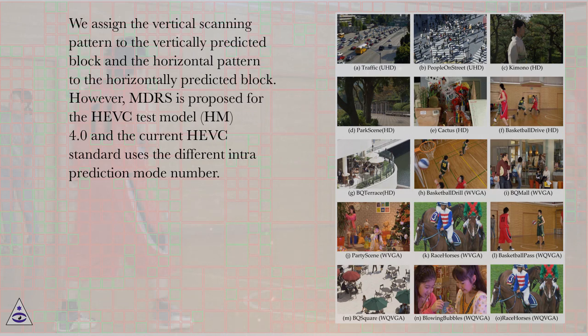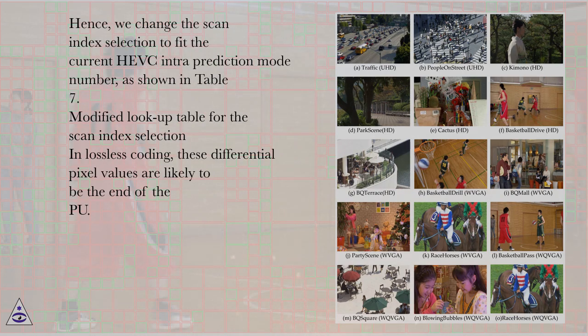However, MDRS is proposed for the HEVC test model HM 4.0 and the current HEVC standard uses a different intra-prediction mode number. Hence, we change the scan index selection to fit the current HEVC intra-prediction mode number, as shown in Table 7.